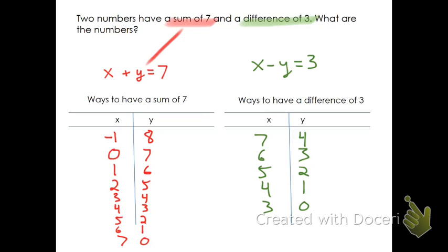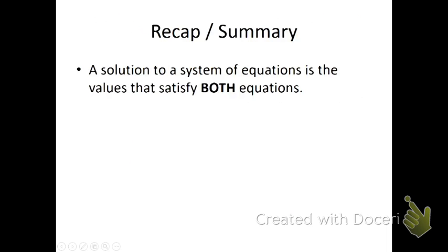But the solution to the system is what's true for both. There is one point that's a solution to both equations — one point on both lines. Graphically, this is where the two lines intersect at the ordered pair five comma two. To recap: the solution to the system is the value that satisfies both equations. In this video we did a lot of guess and check. In later videos, we'll learn how to solve these algebraically when it's not so easy to eyeball the solutions.